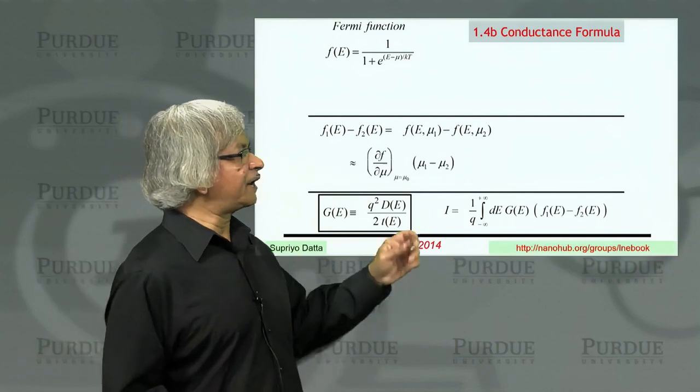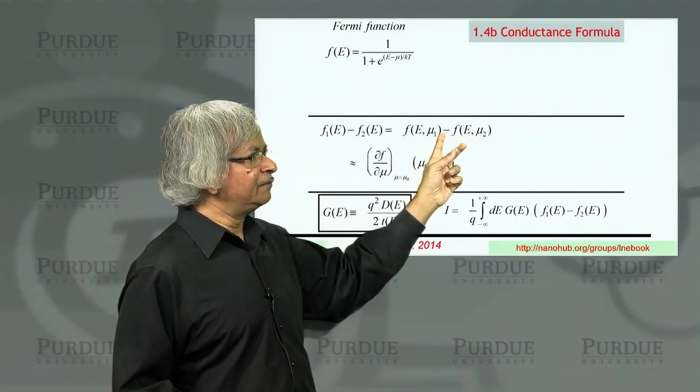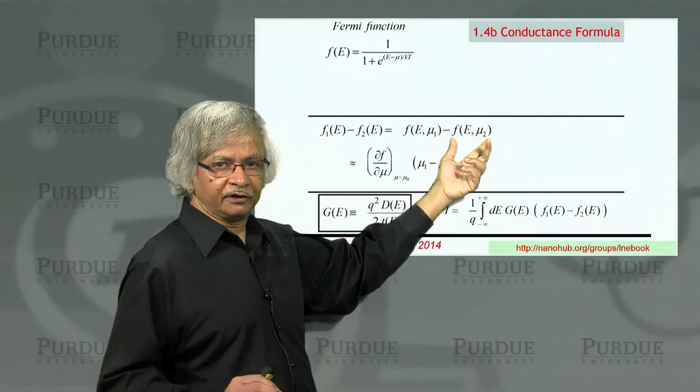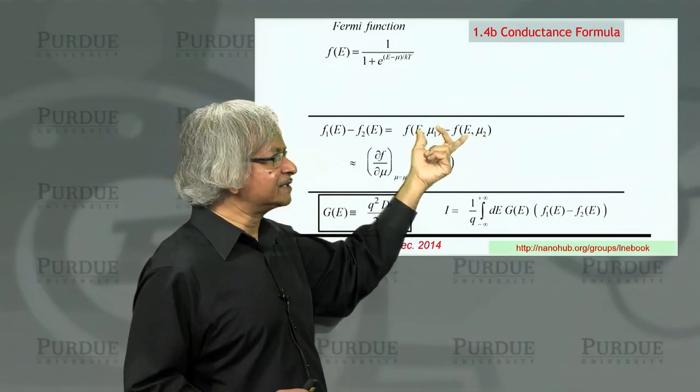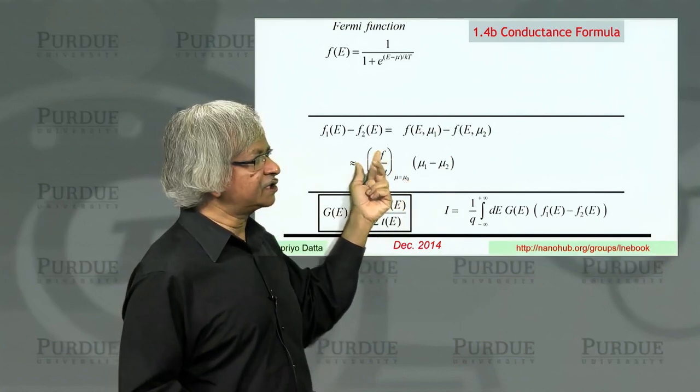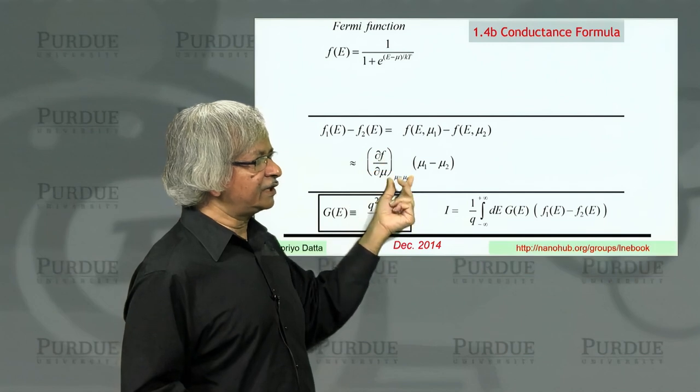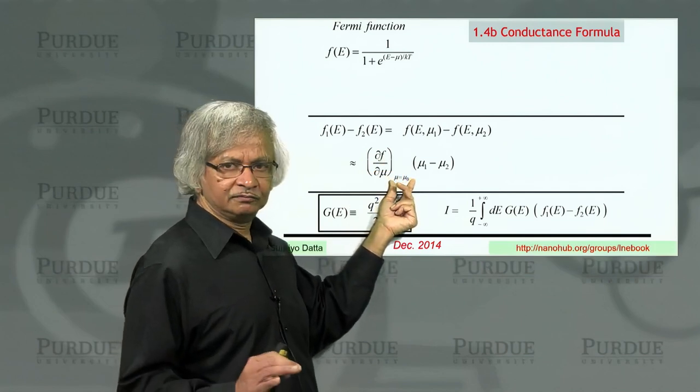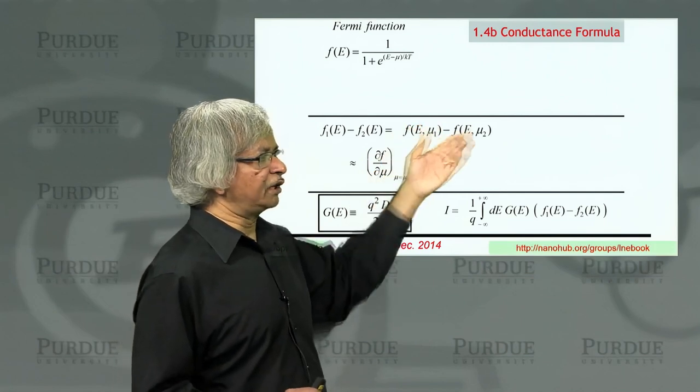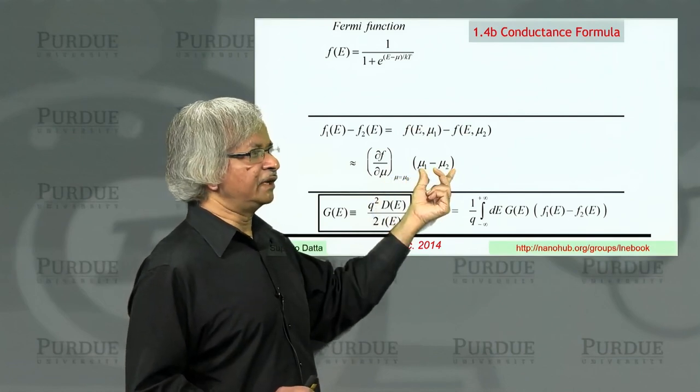Now, what you can do is this Taylor expansion. That is, you could write the difference between these two. Assuming that mu 1 and mu 2 are not too different, you can write this difference as the derivative: partial of F with respect to mu evaluated at the average value. Mu 0 is the average of mu 1 and mu 2. So at that value, whatever it is, times mu 1 minus mu 2.